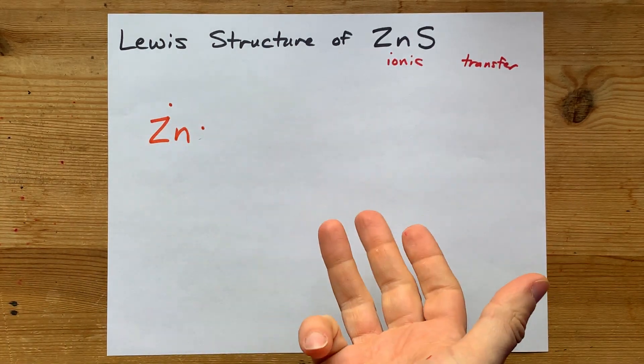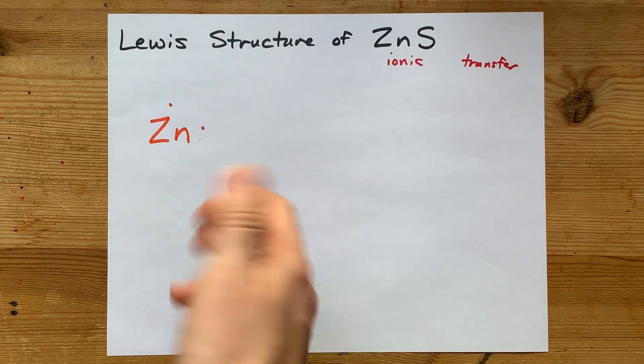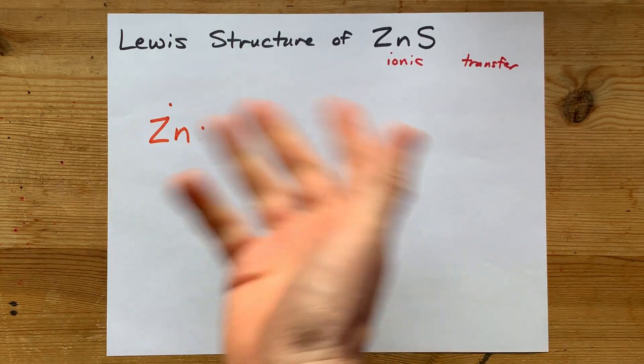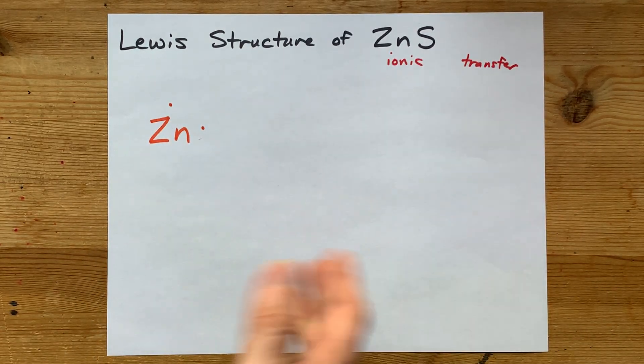If this was iron three sulfide, then I would have drawn Fe with one, two, three valence electrons. That's just how it works.